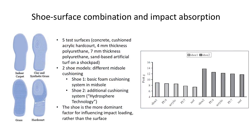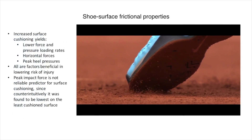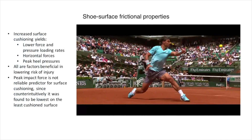When looking at the shoe-surface combination and considering impact absorption, it is possible that the shoe, rather than the surface, plays a greater role in increasing impact absorption. When five test surfaces and two shoe models with differing midsole cushioning were used, the ranking order of impact absorption abilities of the surfaces was found to be similar. However, despite these similarities, biomechanical variables representing impact absorbing ability show that differences between shoes was much more significant. When switching between playing surfaces, the shoe has more potential than the surface to influence impact loading during running, which may have implications for overuse injury prevention.